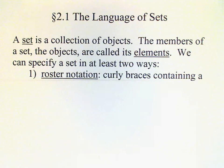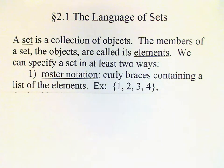First, roster notation is basically just a list of the elements. We enclose the elements in curly braces to denote a set and separate the elements using commas. For example, a set of the first four counting numbers, one, two, three, and four, written in roster notation like this.